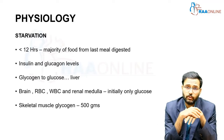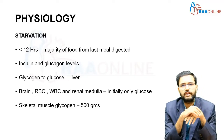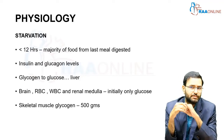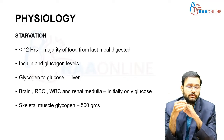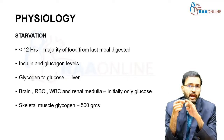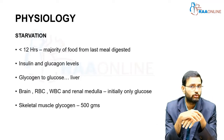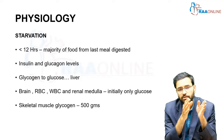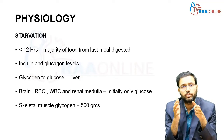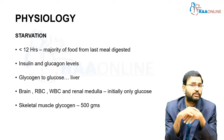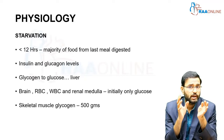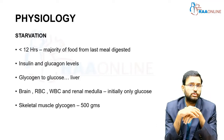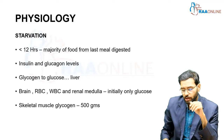Glycogen is converted into glucose because during the initial phases of starvation, various important structures — the brain, WBCs, red blood cells, and the renal medulla — depend only upon glucose for their energy requirements. Not only is glycogen present in the liver, it is also present in skeletal muscles. Skeletal muscles contain about 500 grams of glycogen in a normal healthy adult.